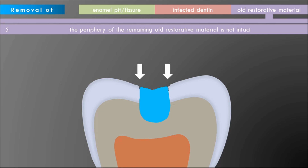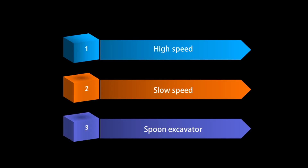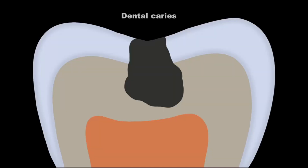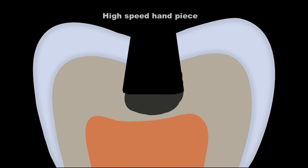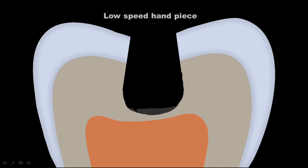For removal of decay, we can use a high speed handpiece, low speed handpiece, or spoon excavator. Enamel caries and caries in the outer dentine can be removed with an aerotor — a high speed handpiece. Caries in the inner half of dentine must never be removed with an aerotor as it may lead to inadvertent pulpal exposure; instead use a low speed micromotor handpiece, preferably with a tungsten carbide burr. Caries close to the pulp must be removed only with a hand instrument like a spoon excavator.